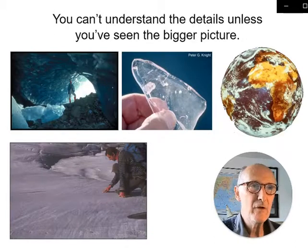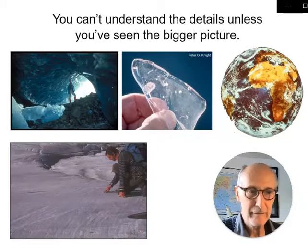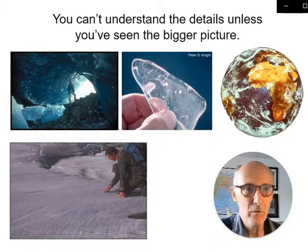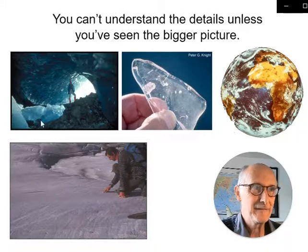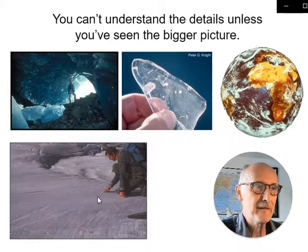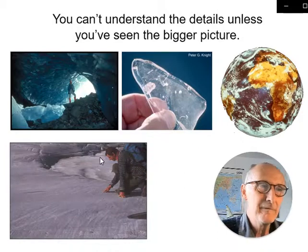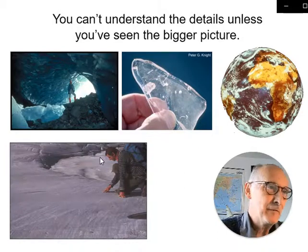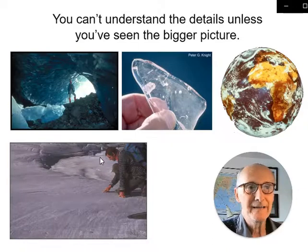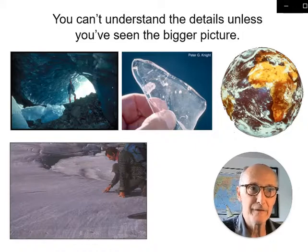My starting point is the argument that you can't understand the details of how glaciers behave — what they do, how they work — if you haven't seen the bigger picture that they are a part of. Here's me standing in a meltwater tunnel underneath the Greenland ice sheet; here's David Sugden looking at micro-scale striation landforms on bedrock in West Greenland; and here's a close-up of a tiny bit of ice cut from the front of a glacier. All of those local examples connect to processes operating at the global scale — those connections between the global and the local, the macro and the micro.